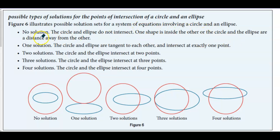No solution is when the circle and the ellipse do not intersect — one shape is inside the other, or the circle and the ellipse are a distance away from each other.